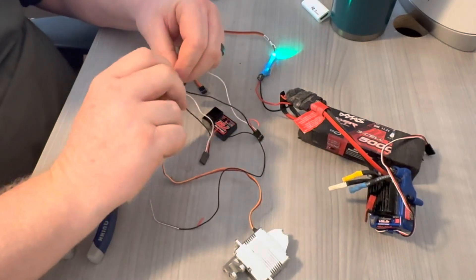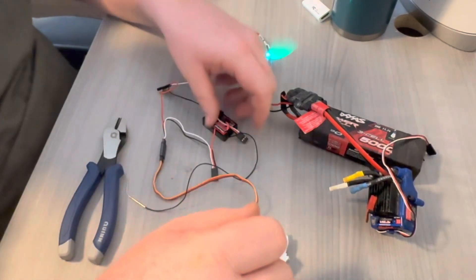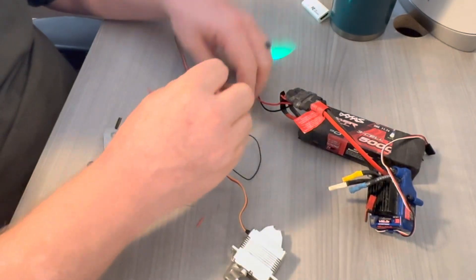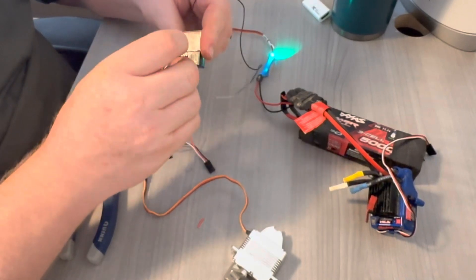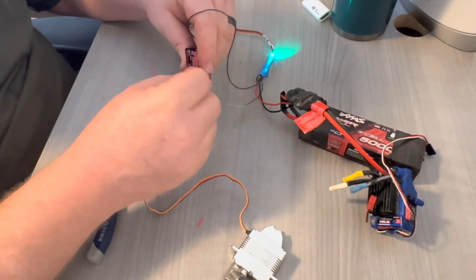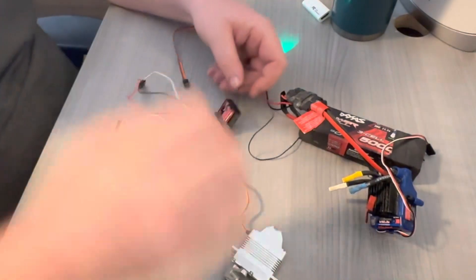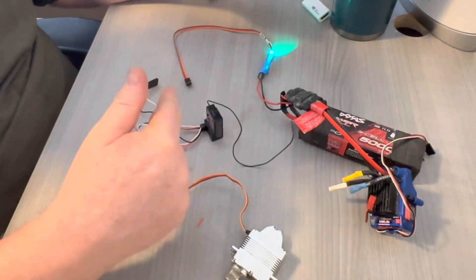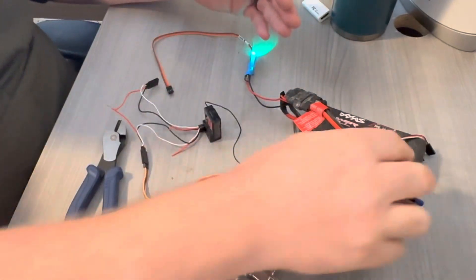And then just hook it up like normal. But now you're going to need to run on both channel ones. This is going to go into channel one, and this is also going to go into channel one. And then now when you power this up, the power is just going to bypass the receiver. You're going to get power directly from the BEC, and the receiver is still going to be powered from the ESC like normal.